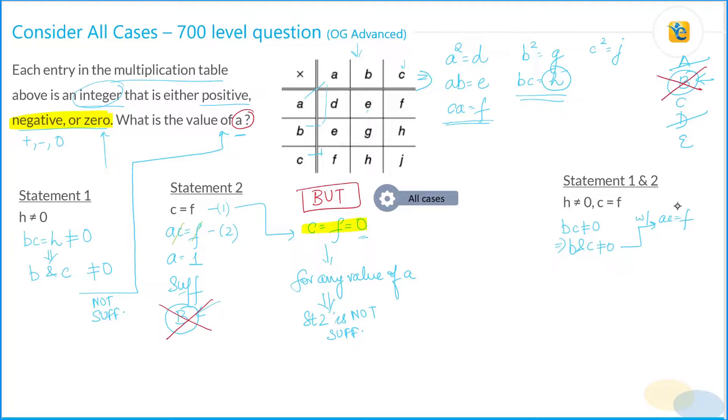Now you combine this information with the information that ac is equal to f and c is equal to f, and you can get that a is equal to one because now this particular case is not applicable because c is not equal to zero according to statement number one. So now the correct answer actually is choice C. Together they are sufficient.